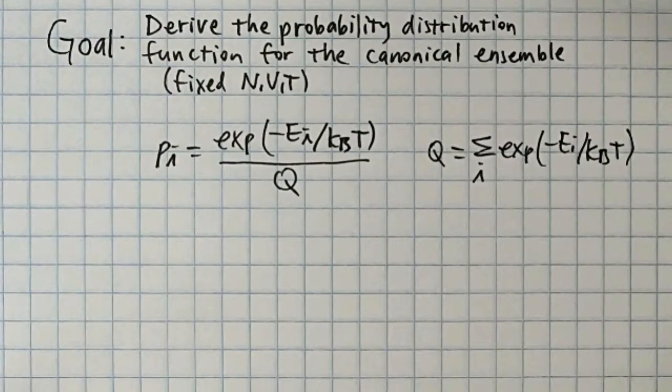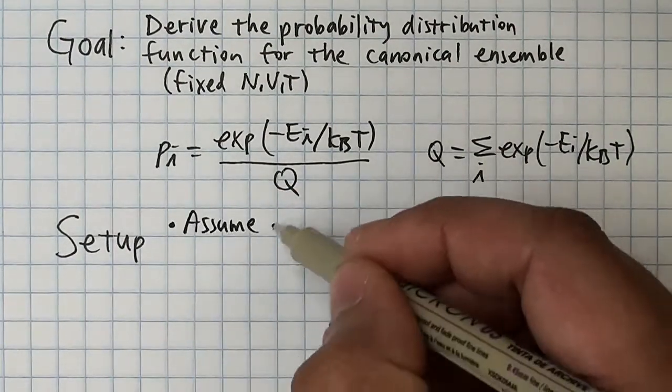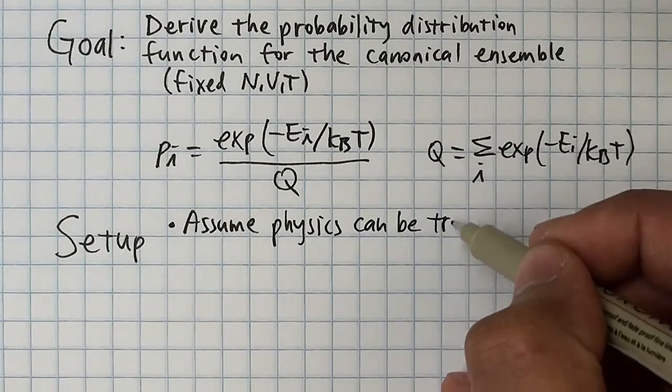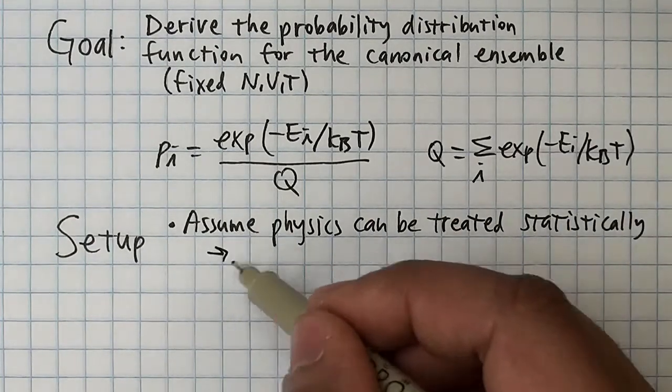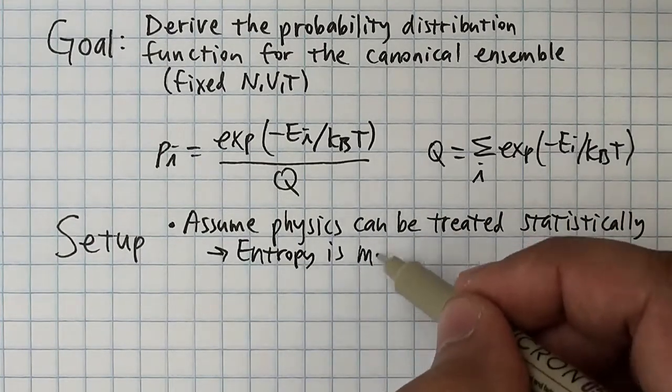To set up this derivation, we have to make two assumptions. Number one, that physics can be treated statistically and thus entropy is maximized. This is just a statement of the second law of thermodynamics.